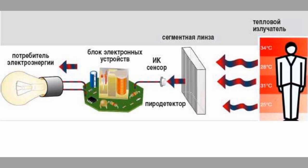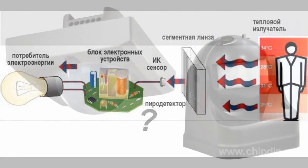The brightness of the infrared light depends on the body temperature. The higher the temperature, the brighter the light, and vice versa. That is why the infrared glow of the human body is the highest, and the sensor detects it immediately.